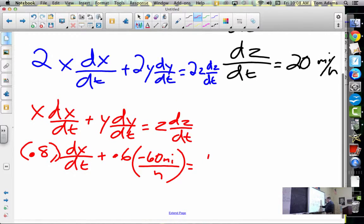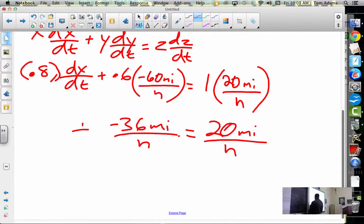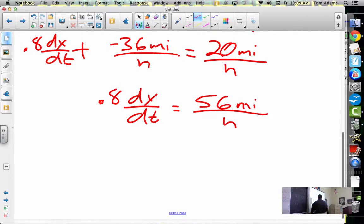So now let's go back. Way over here I've got 1 times dz/dt, which was 20 miles per hour. So this is negative 36 miles per hour equals 20 miles per one hour. And then I'm adding that to 0.8 dx/dt. Now if I add the 36 to both sides, I get 0.8 dx/dt equals 56 miles per one hour. Because I'm going to add 36 to both sides. So then I'm going to divide everything by 0.8.